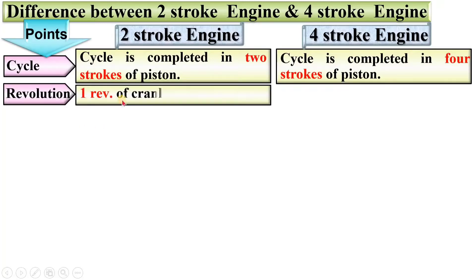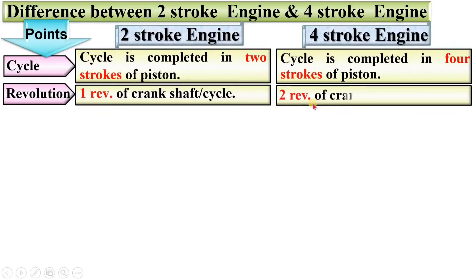Next, revolution. One revolution of the crankshaft per cycle in case of a two-stroke engine. Whereas, in case of a four-stroke engine, two revolutions of the crankshaft per cycle.